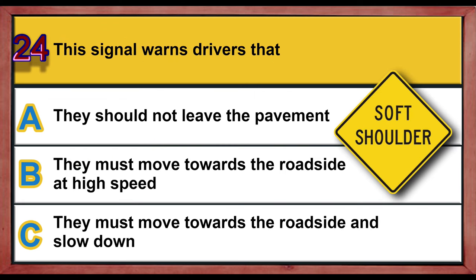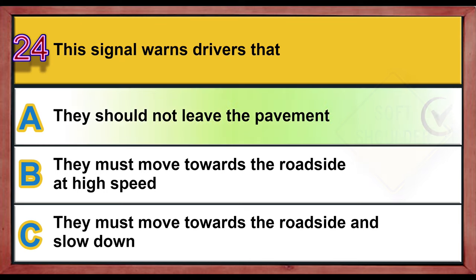Question 24. This signal warns drivers that: A. They should not leave the pavement. B. They must move towards the roadside at high speed. C. They must move towards the roadside and slow down. Correct answer is A: They should not leave the pavement.